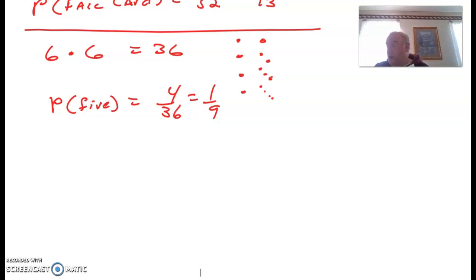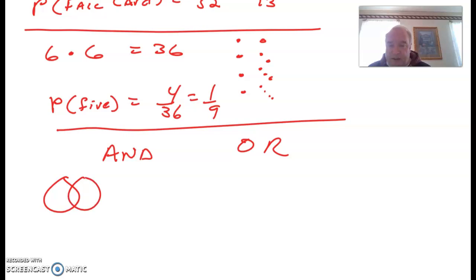All right, coming down to the home stretch here. Now we're talking about probabilities with AND and OR. All right, so think about your sets. All right, so AND, the union, AND was union, OR would be disjoint. Okay, AND would be union, OR would be disjoint, because disjoint is mutually exclusive.